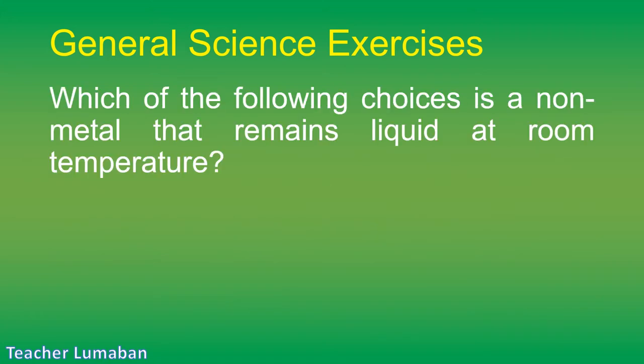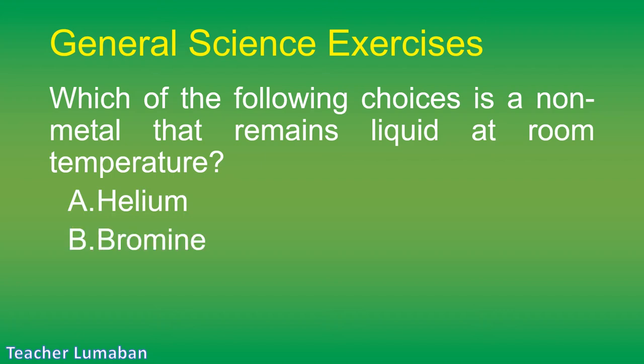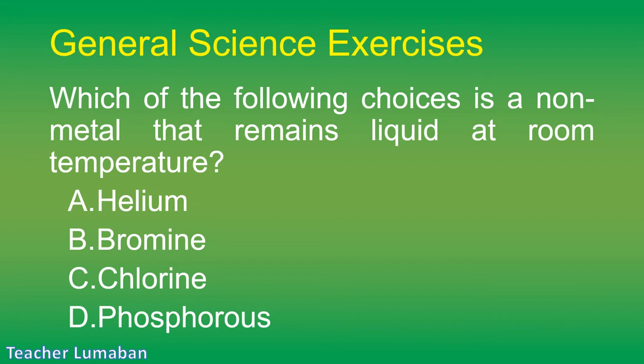Which of the following is a non-metal that remains liquid at room temperature? Letter A: helium. Letter B: bromine. Letter C: chlorine. Letter D: phosphorus.